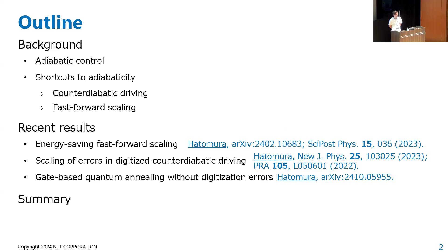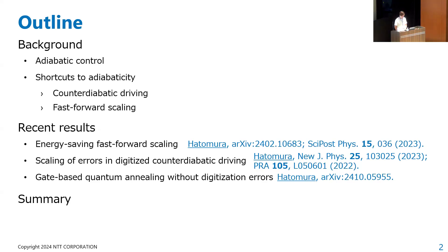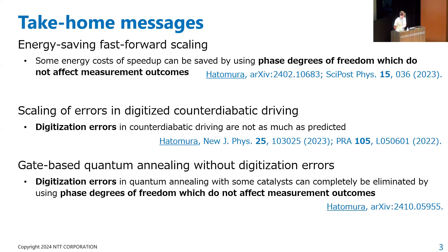This is the outline of the talk. I will explain shortcuts to adiabaticity. In particular, I focused on two methods: counter-diabatic driving and fast-forward scaling. After that, I will discuss three topics based on my papers. Before moving into the main content, let me summarize the take-home message and emphasize some keywords.